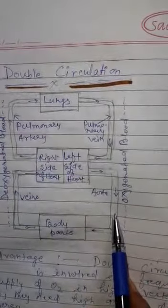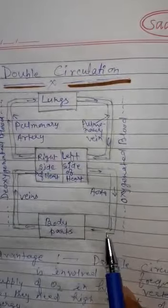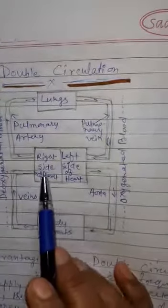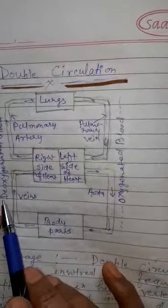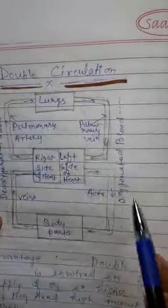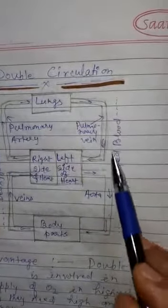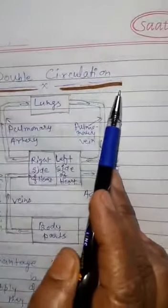Further, aorta receives this pure blood and by its branches transported into the body parts. So, from its right side, the deoxygenated blood is transported and from its left side, oxygenated blood is transported which is known as double circulation.